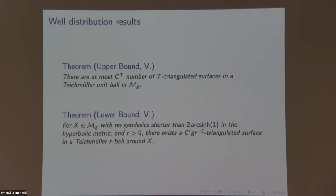If you only have time to read one bound, read the upper bound because that is the key part of the proof — the lower bound is not very surprising. The main result is that there are at most exponentially many — specifically e to the Ct — triangulated surfaces in a Teichmüller unit ball in moduli space of genus g, where C is an absolute constant like a thousand, not depending on t or g. There is also a lower bound: if you have a ball in the thick part of moduli space, you can find a triangulated surface in it.